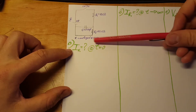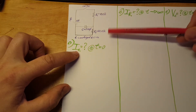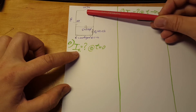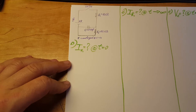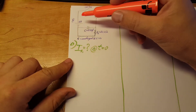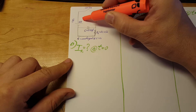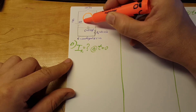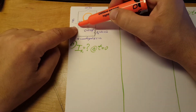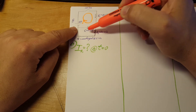The first question is to find the current through resistor one at time zero — at the instant that we close the switch. For this we're going to use the loop rule on the upper part of this circuit, and we're going to go clockwise.